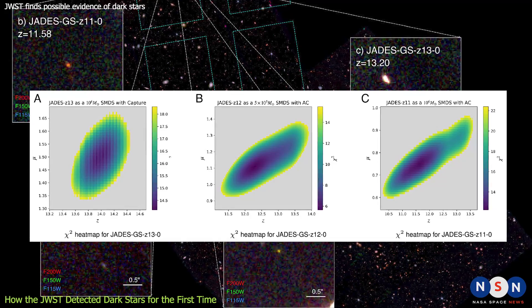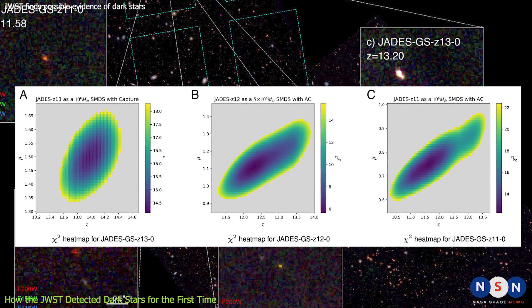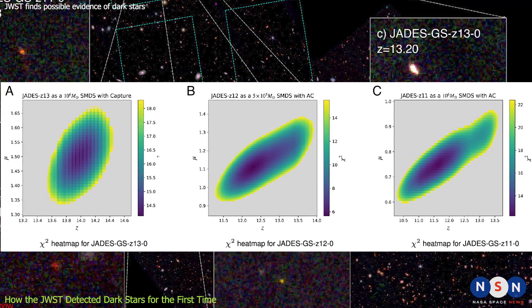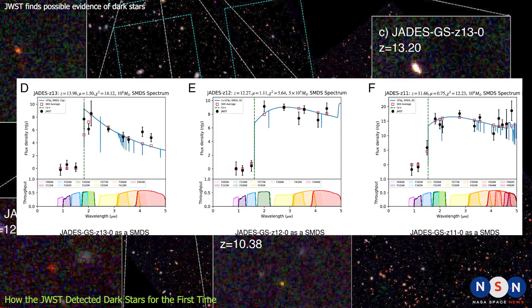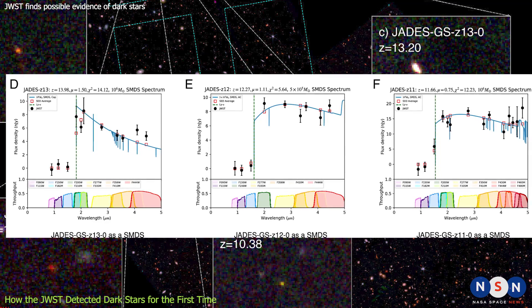They detected several dark stars that were more than 100 times more massive than the sun and more than a billion times more luminous. They also measured their spectra and found that they had very low surface temperatures, around 10,000 degrees kelvin, and very high infrared emissions. They also found that they had very unusual chemical compositions with very low amounts of hydrogen and helium and very high amounts of heavier elements such as carbon, oxygen, and iron. These findings matched the predictions of Frise's theory of dark stars. They also confirmed that these stars were very old, dating back to the early universe, before the first atoms of hydrogen and helium were formed. They were the first direct evidence of dark stars ever found.